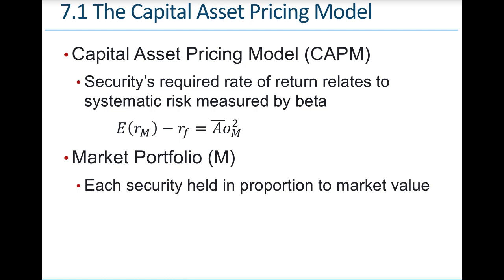A security is going to require a rate of return that relates to its systematic risk. Beta measures the systematic risk, as we discussed last chapter. We want to look at how the stock is performing in relationship to the market, so the market is sort of our baseline.